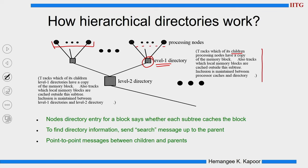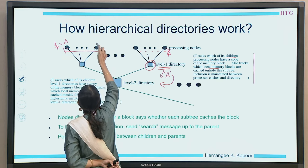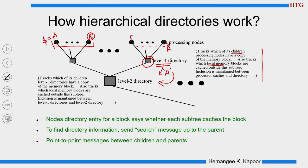The level 1 directory keeps track of which child processing nodes have a copy of the memory blocks - it knows what blocks are cached by its child processors within the hierarchy. It also keeps track of local memory blocks which are housed outside. For example, if block A is local to this processor but has gone to another node's cache, the level 1 directory must know that block A has gone outside. It also must track which remote blocks have come in.